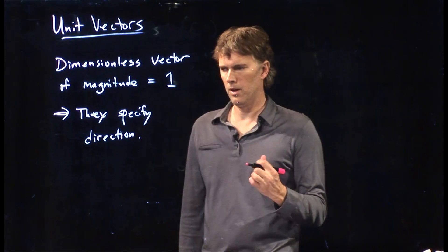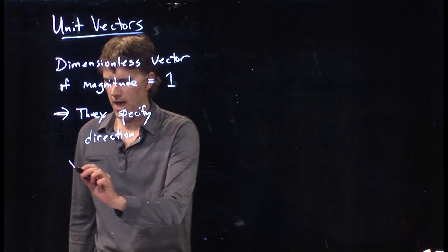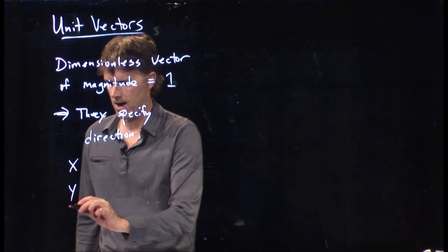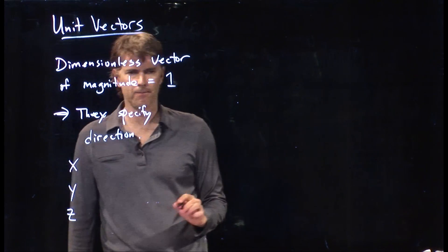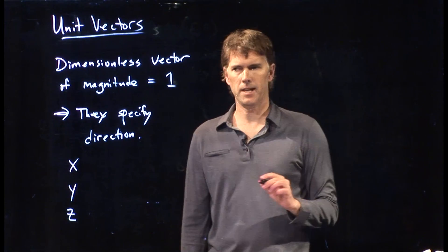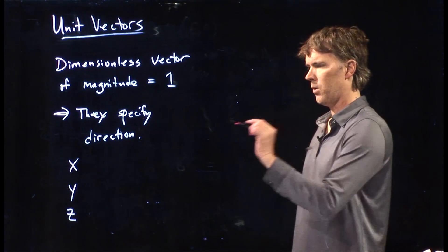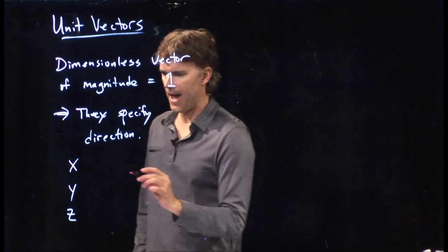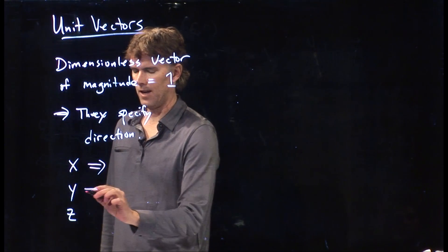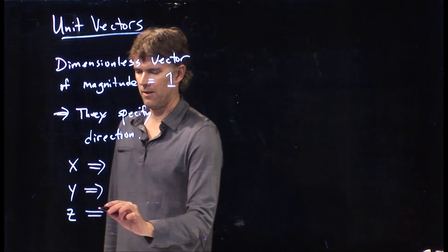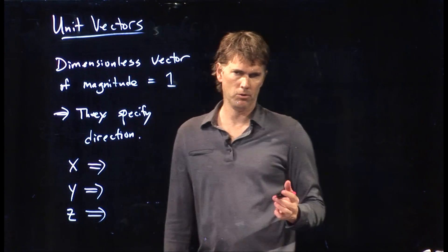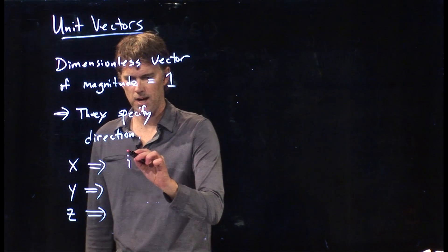Now, in our Cartesian coordinate system, we said we have x, we have y, we have z. And so we'd like to identify unit vectors that correspond to the x-axis, the y-axis, and the z-axis. And the ones that we choose are i, j, and k.